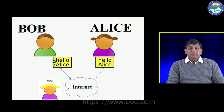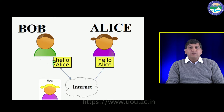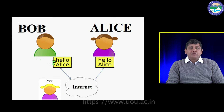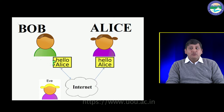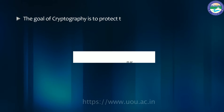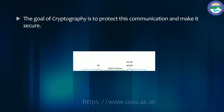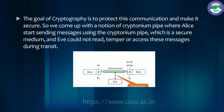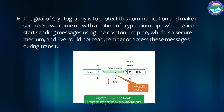In this example, Eve is interested in the private conversation between Bob and Alice and can do much more than eavesdropping. Eve can change the content of the message and that could be catastrophic. The goal of cryptography is to protect this communication and make it secure.